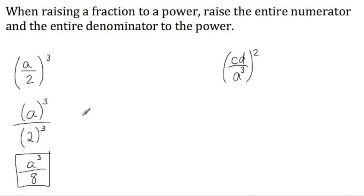Let's take a look at where this rule came from. How could we rewrite this expression that would help us see why this rule actually works? Here what we're doing is we're taking a over 2 and using it as a factor 3 times. So let's represent that. We use a over 2 as a factor once, twice, and 3 times.